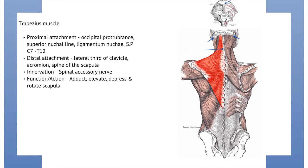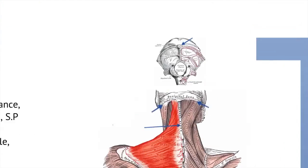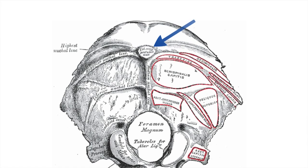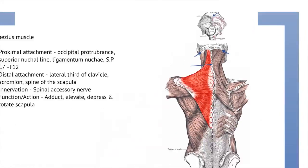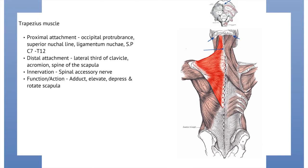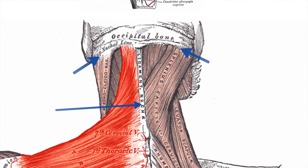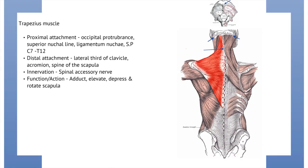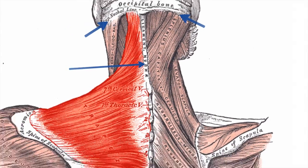The next muscle is the trapezius muscle. There are several proximal attachments for this muscle. Let's start with the occipital protuberance, which you can see in this diagram — it's basically just a bony line mark on the external surface of the occipital bone. The next one is the superior nuchal line, a curved line on the external surface of the occipital bone. And then the ligamentum nuchae, demonstrated here by the long arrow.